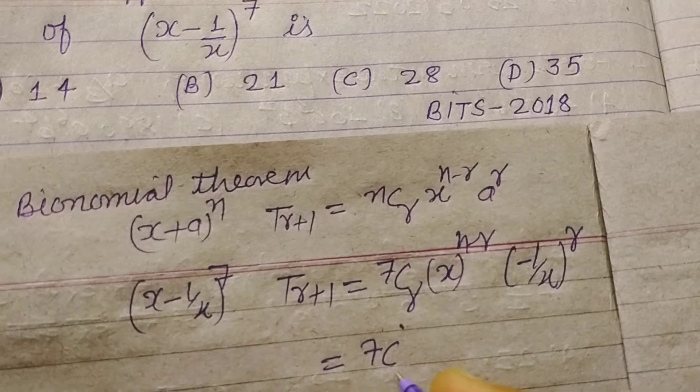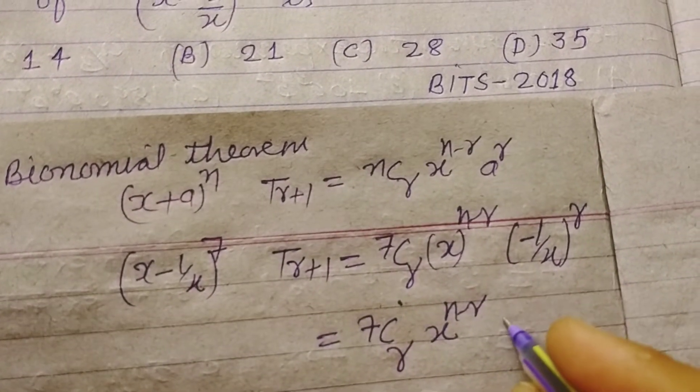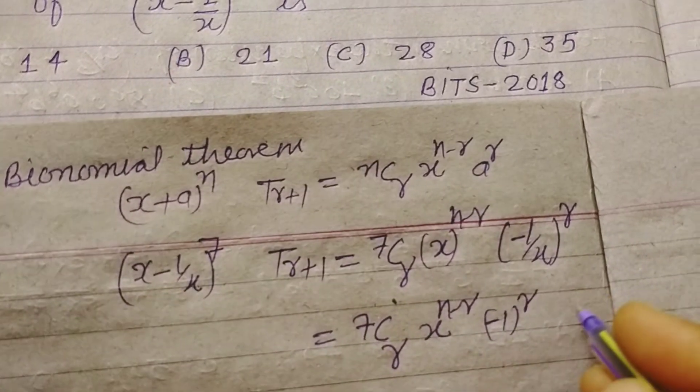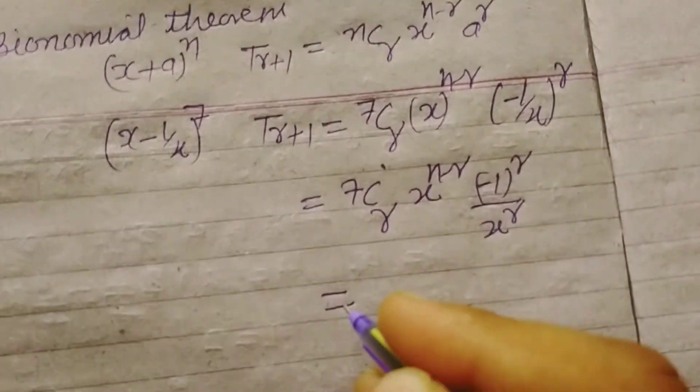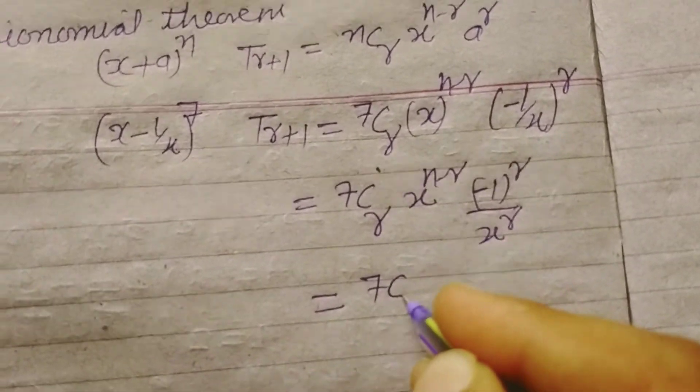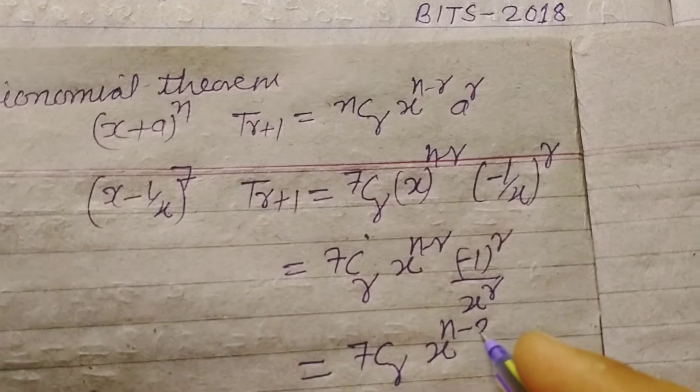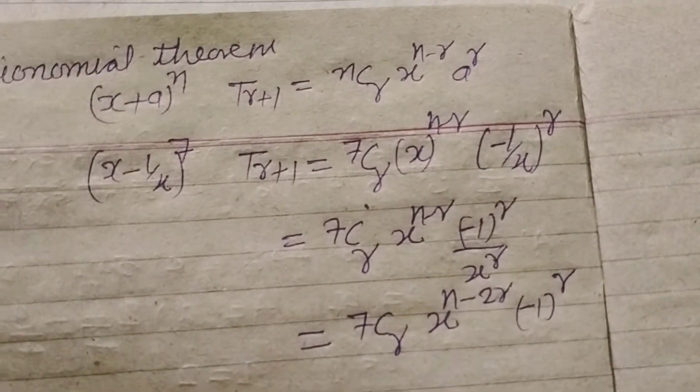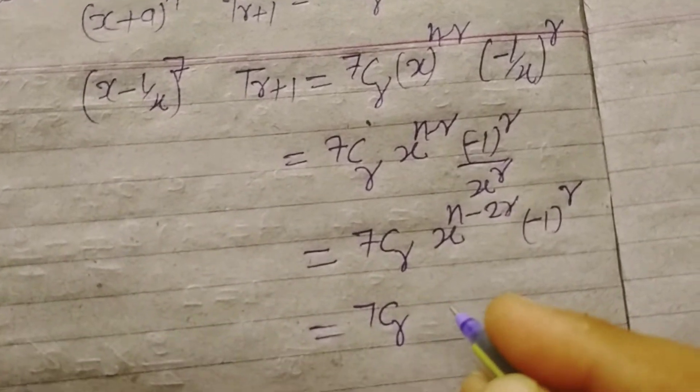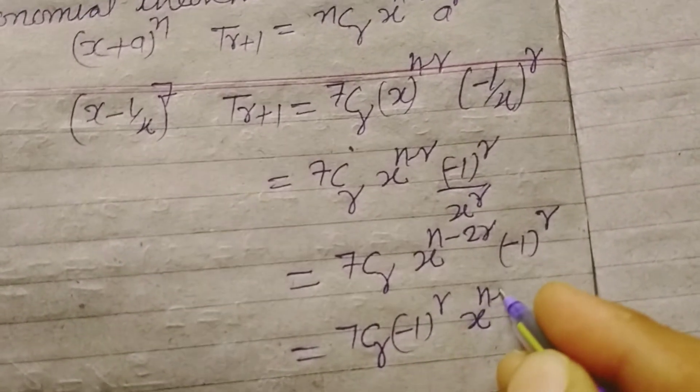So here 7Cr x to the power 7 minus r times minus 1 to the power r upon x to the power r. We write it as 7Cr x to the power 7 minus r minus 2r times minus 1 to the power r. So 7Cr minus 1 to the power r x to the power 7 minus 2r.